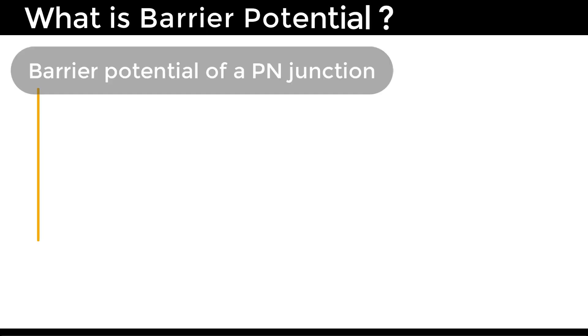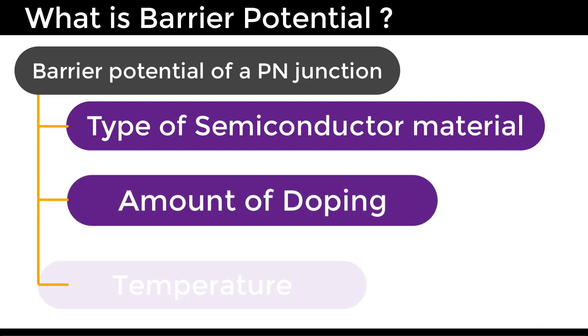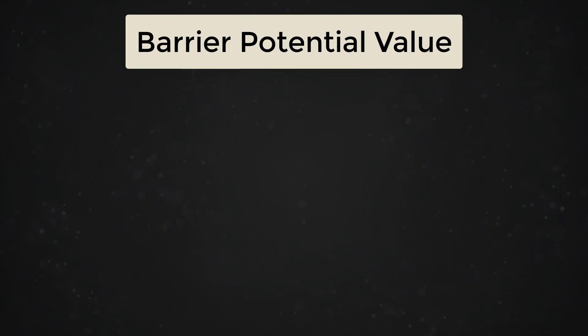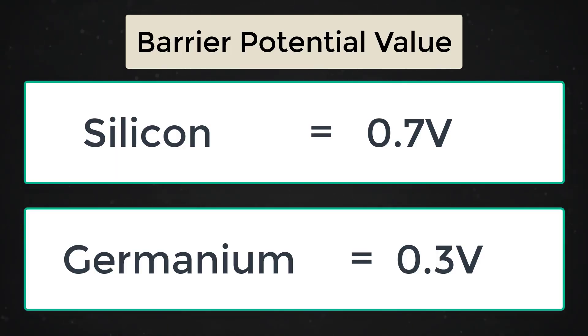Barrier Potential of a PN junction depends on the type of semiconductor material, amount of doping, and temperature. This is approximately 0.7V for silicon and 0.3V for germanium.